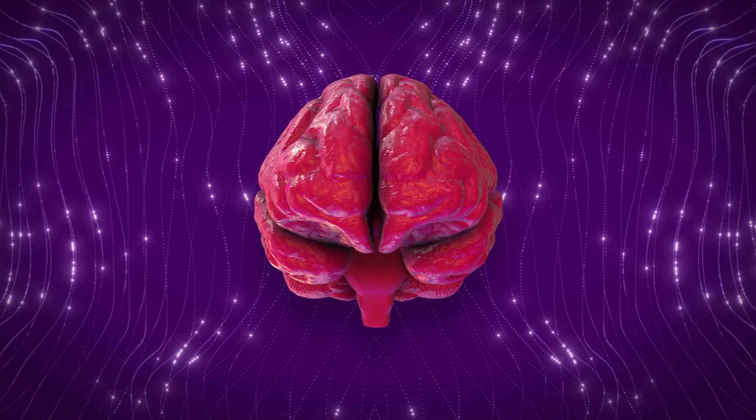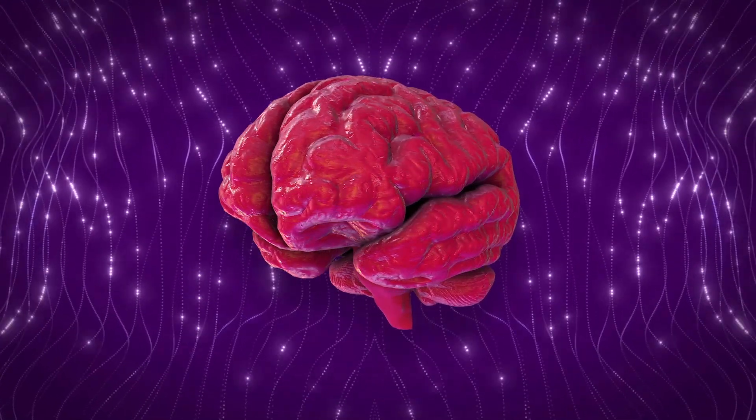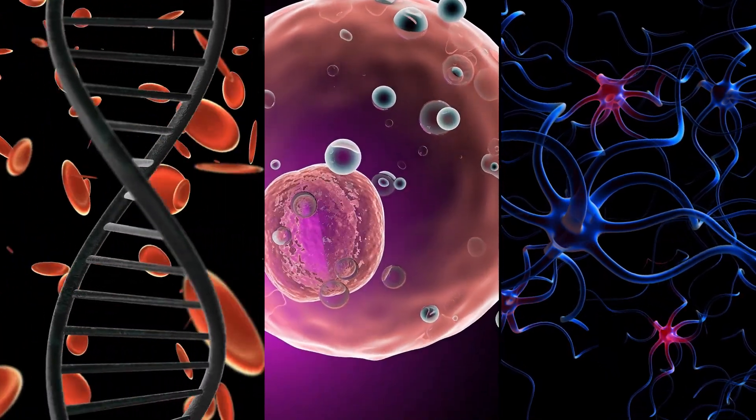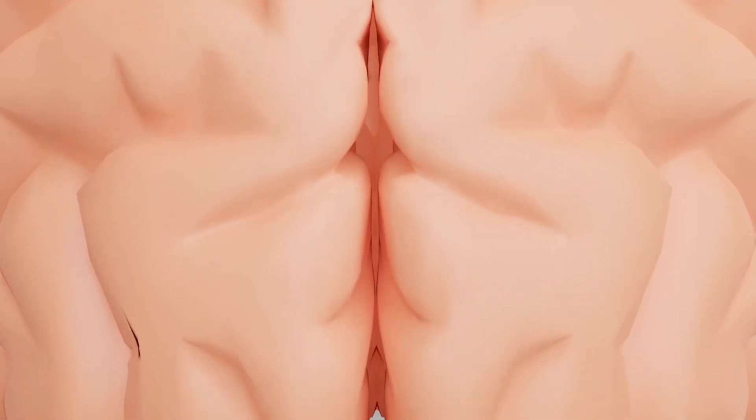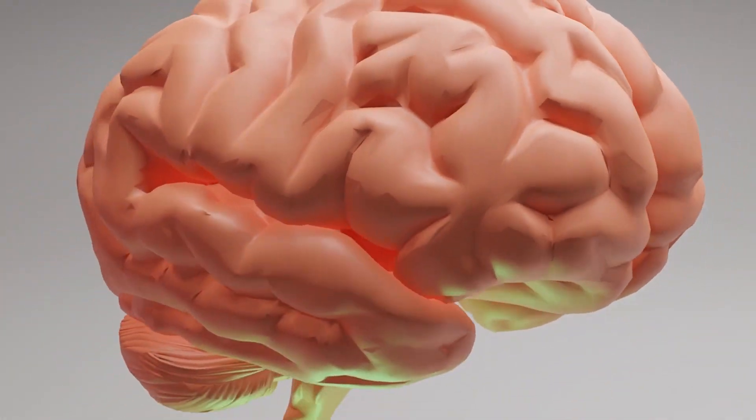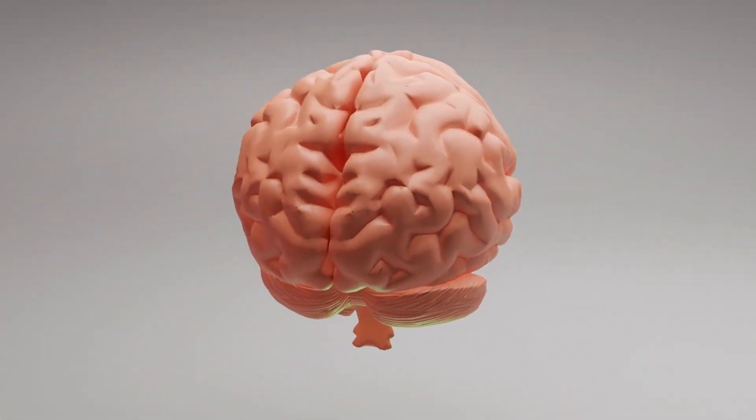But over time, different parts of the brain link up with that neocortical region through molecular, cellular, and neuronal changes, making the memory accessible from various angles. Storage like this as a long-term memory can protect a memory for decades.